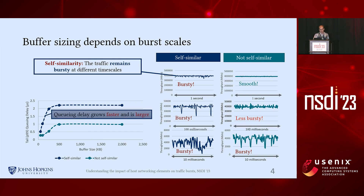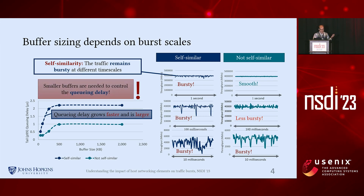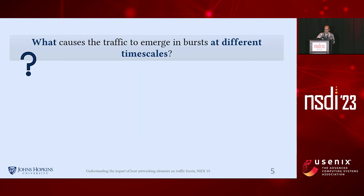For example, if we plot the queuing delay of these two workloads under different buffer sizing settings — where we increase the size of the switch buffer from 50 kilobytes up to 2 megabytes — the queuing delay grows faster and is larger for the strongly self-similar traffic. That means smaller buffers are needed for that kind of workload to prevent large queuing delays.